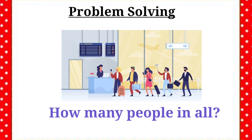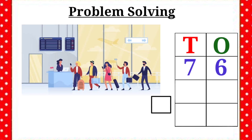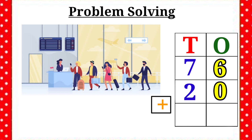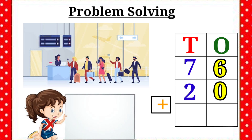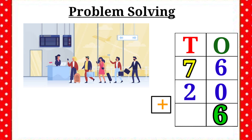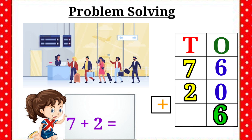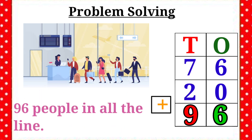Very good. Now we are going to write the given numbers in the correct places. 76 plus 20. We know that first we will add the 1's place. 6 plus 0 is equal to 6. Let's write the number 6 in the 1's place. Then add the 10's place. 7 plus 2 is equal to 9. Let's write the number 9 in the 10's place. Therefore, the answer is 96 people in all the line.